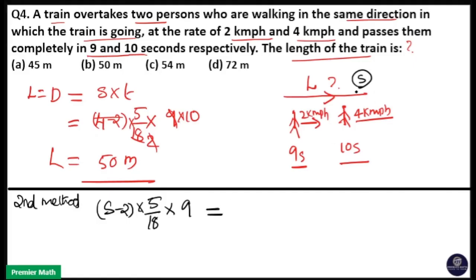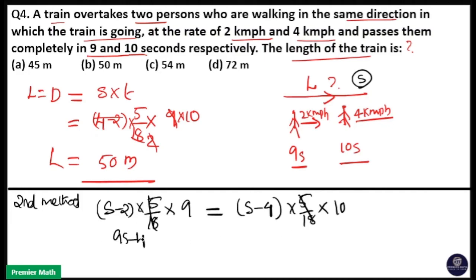This distance is the same as the distance traveled by the train while overtaking the second person. The relative speed in the second case is S minus 4 km per hour, converted to meters per second, and the time taken is 10 seconds. Equating the two: 9S minus 18 equals 10S minus 40, so S equals 22 km per hour.